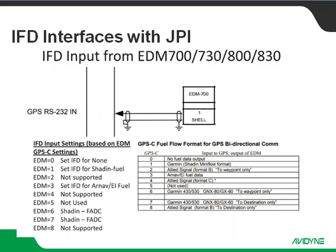The way that most RS-232 interfaces are set up is there's a configuration on both ends of that RS-232 that have to match. What I've got here is a chart that'll help you figure out what settings match what. We're talking about the transmit out of the EDM-700 and an RS-232 in. I didn't bother labeling the pins because you can use any available RS-232 for this. On the EDM series there's what they call a GPS-C setting, and depending on how that thing is configured determines what format the information coming out is. That's going to determine how we want to set up the IFD input to read that information correctly.